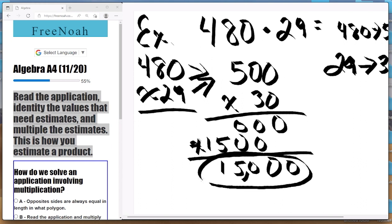When we add everything together we get a total of 15,000. So 15,000 is a product estimate of 480 times 29. And this can give you a somewhat accurate, not precise calculation of any problem. Product estimates.